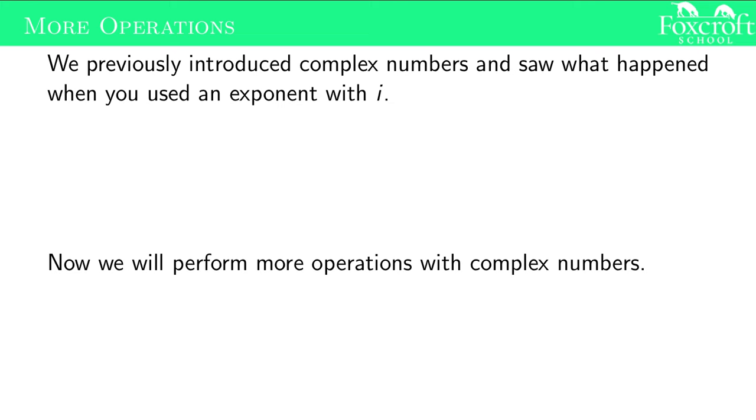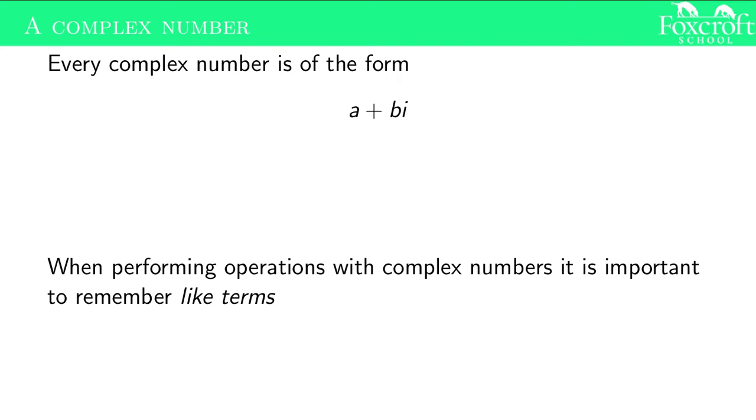Now we're going to perform more operations like addition, subtraction, and multiplication. Every complex number is of the form a plus bi. This is what we call the real part - it's just some real number like 2, 5, negative 4, whatever. And this is what we call the imaginary part.